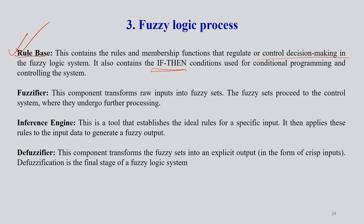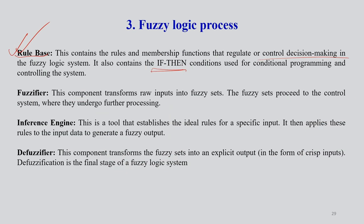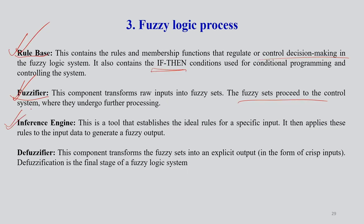People who have used fuzzy logic systems for research will understand what I'm explaining. For others, I'm trying to simplify the entire concept as much as possible - how different information through this particular EIA method helps us get certain information as output. The fuzzifier component transforms raw inputs into fuzzy sets, which proceed to the control system for further processing.